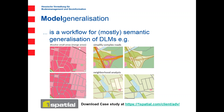Looking more closely at Model: it does mostly semantic generalization. Examples include merging or dissolving small areas, as you can see on the left. An important functionality is simplifying complex roads — for instance, if you have two or more lanes, you get just one center line for a road. We also do neighborhood analysis: if you have a row of small areas you want to keep them, but if it's just a single small area like an isolated lake, you would delete it. Model is 100% automatic — just one run and then we put the data back into our database.